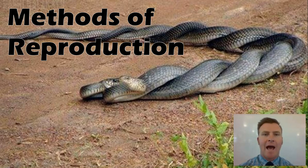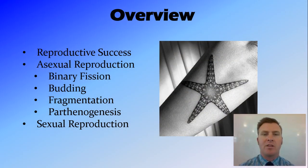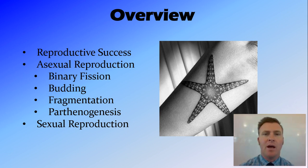Hi guys, in this video we're going to look at methods of reproduction. We're going to talk about what reproduction is and what constitutes reproductive success. We're then going to talk about the two methods of reproduction, asexual reproduction and sexual reproduction, and then we're going to look at some of the forms of asexual reproduction including binary fission, budding, fragmentation and parthenogenesis.